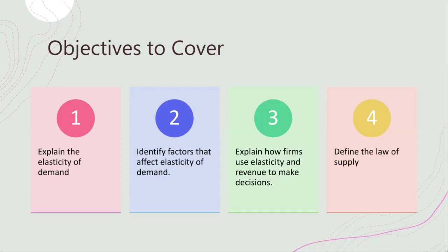Moving on to the law of supply: the law of supply states that all else being equal, as the price of a good or service rises, the quantity supplied increases, and vice versa. Several factors can affect supply. Input costs play a significant role — if the cost of inputs like labor or raw materials increases, producers may supply less of a product at each price level.